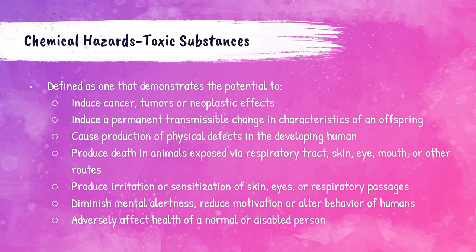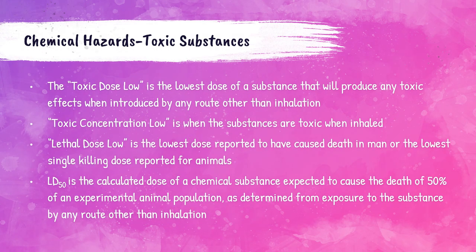A toxic substance is one that has the potential to cause cancer, tumors, or other neoplastic effects; induce a permanent transmissible change in the characteristics of a person's offspring; cause physical defects in the developing human; or produce death in animals via respiratory tract, skin, eye, mouth, or other routes. Toxic substances can also produce irritation or sensitization of the skin, eyes, or respiratory tract, diminish mental alertness, reduce motivation or alter behavior, or adversely affect the health of a normal or disabled person.